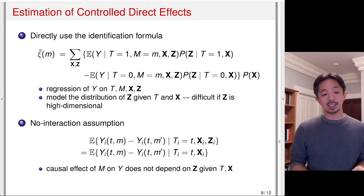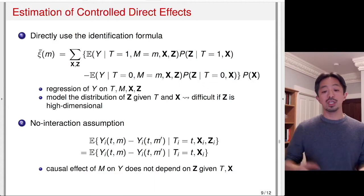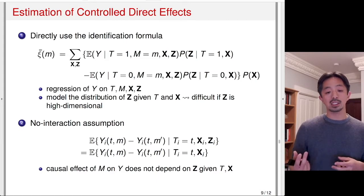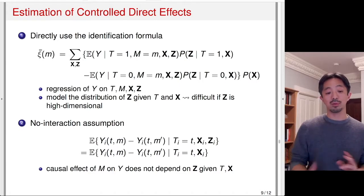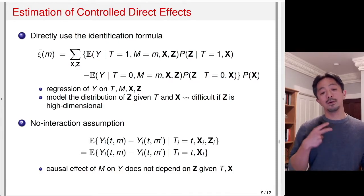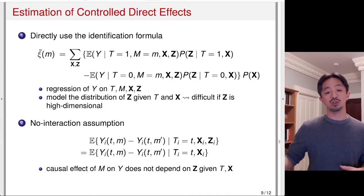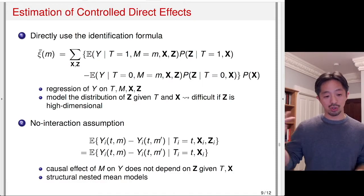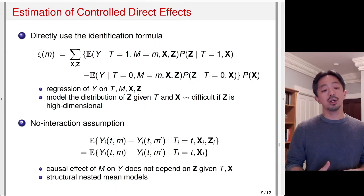The no-interaction assumption says that the causal effect of M, the mediator, on the outcome does not depend on the post-treatment confounder Z, given T and X. In other words, the treatment variable T and the pre-treatment covariate X explain the heterogeneity, and once we condition on T and X, the post-treatment confounder Z does not explain the heterogeneity of the effect of the mediator on the outcome. If this assumption holds, in addition to the sequential unconfoundedness identification assumptions discussed earlier, then we can use a different approach called structural nested mean models.